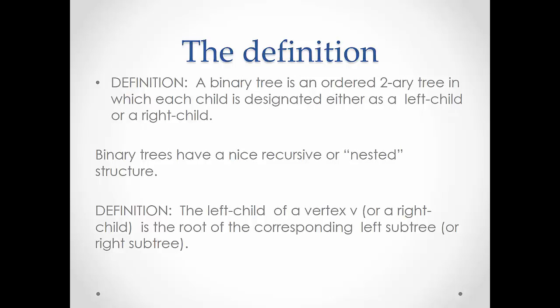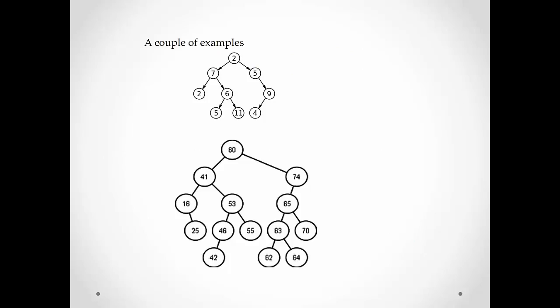Binary trees have a nice recursive property, because the left child of a vertex is in turn the root of the left subtree. For example, we have two binary trees. Let's look at the top one. The root is labeled 2. Its left child is labeled 7 and its right child is labeled 5. But 7 is in turn the root of the left subtree.